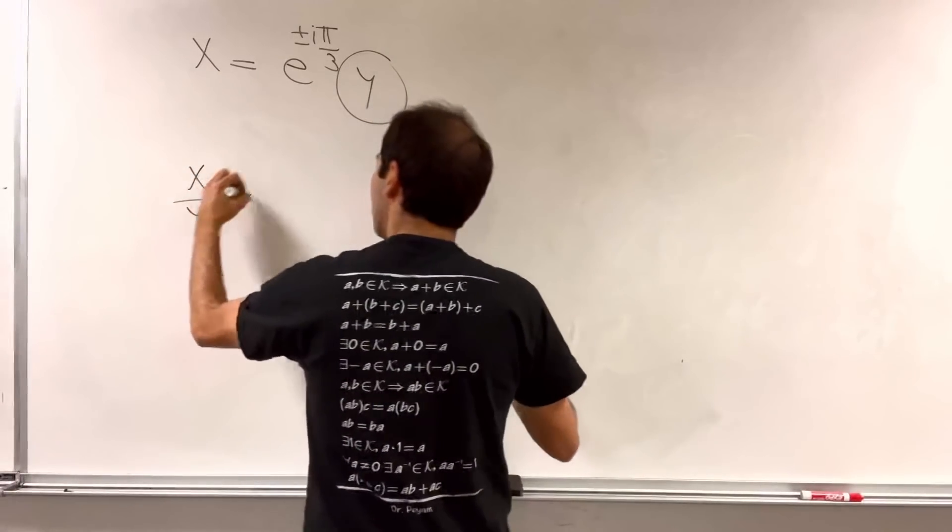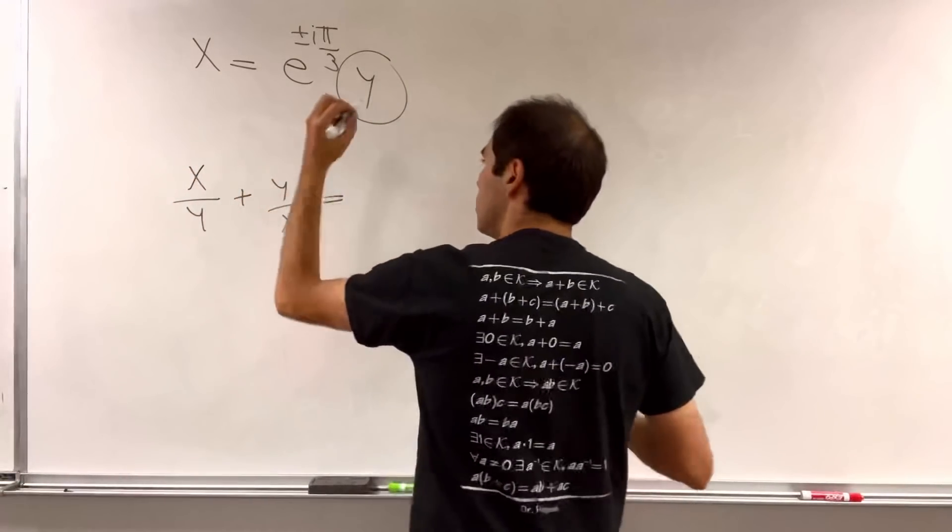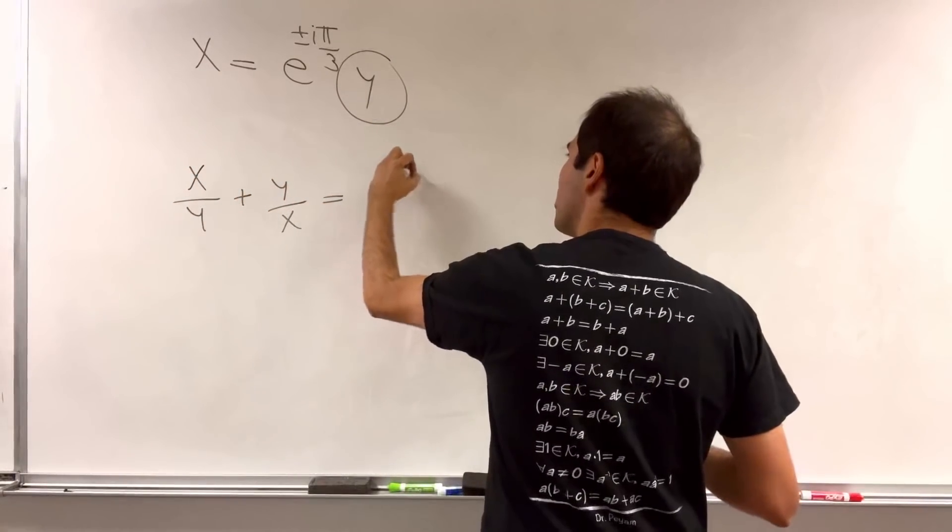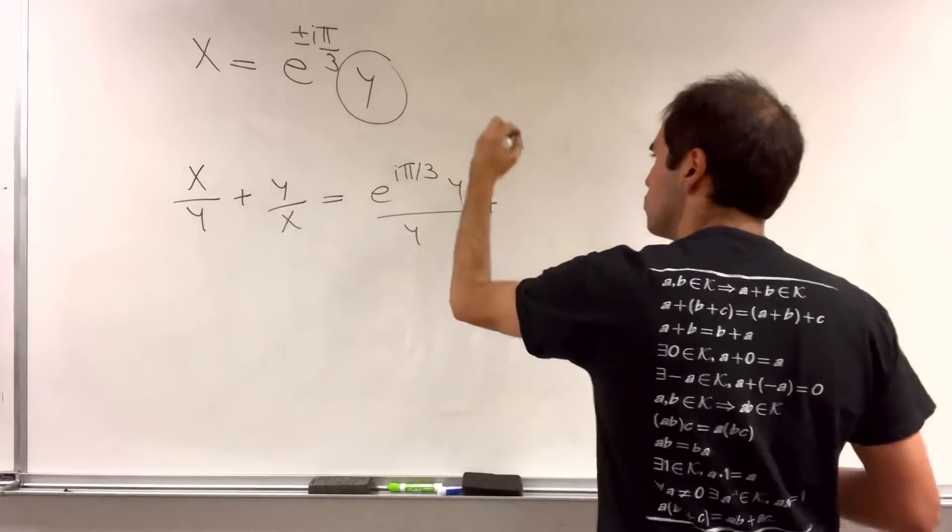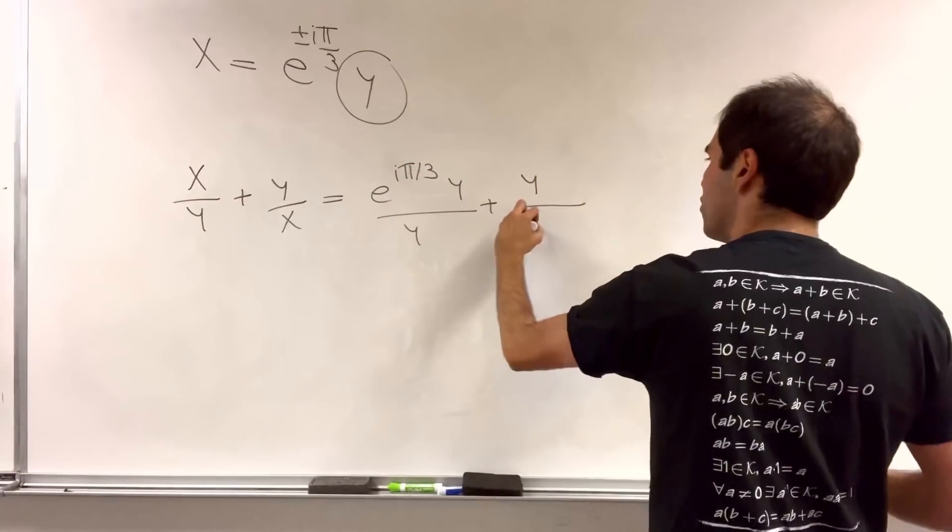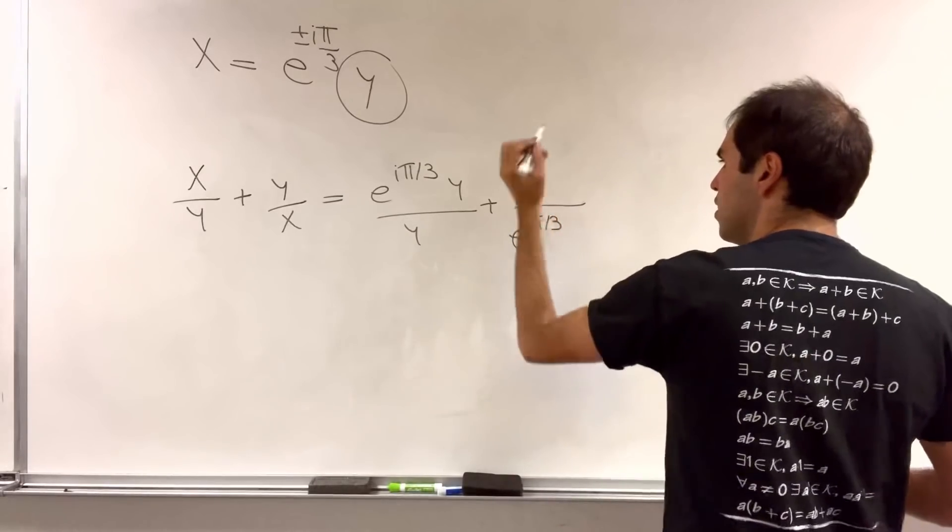that is e to the i pi over 3 y over y plus y over e to the i pi over 3 y.